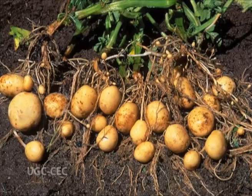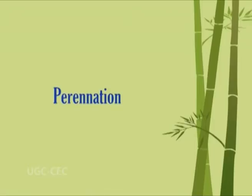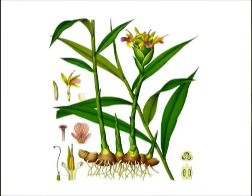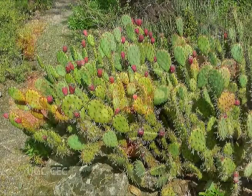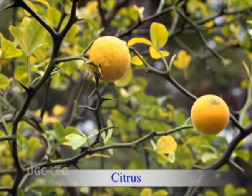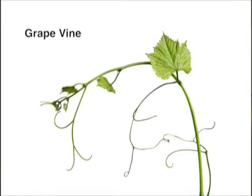Secondary functions of the stem include: storage — stems store food and water, for example, potato; perennation — underground stems help tide over unfavourable growing periods, for example, ginger; vegetative propagation — the stem can be a means of vegetative propagation, for example, rose and sugarcane; photosynthesis — in certain plants like xerophytes where leaves are reduced, the stem takes up photosynthesis and possesses chlorophyll, for example, Opuntia; protection — in some plants the axillary bud modifies into a thorn and protects the plant from animals, for example, Citrus and Duranta; and climbing — tendrils or hooks are modified branches or buds that coil around a support and help the plant to climb, for example, grapevine.